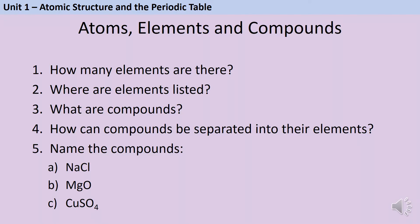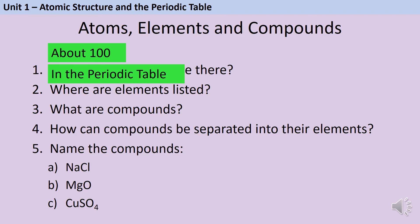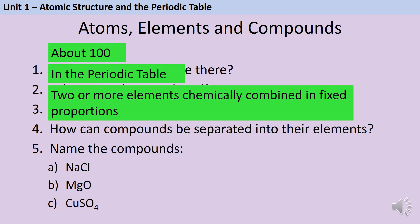For GCSE chemistry you should know that there are about 100 elements — you don't need to know a more exact figure than this. The elements are listed in the periodic table of elements. Compounds are substances made from more than one element chemically combined in fixed proportions. Chemically combined is AQA's way of saying bonded, and fixed proportions means there's always the same ratio of elements to each other, so we can represent this using a chemical symbol like H₂O.